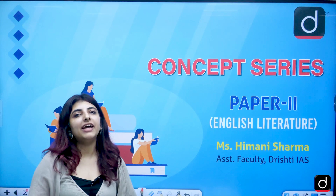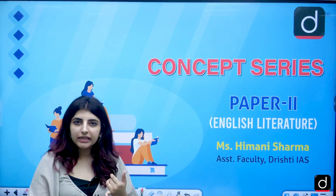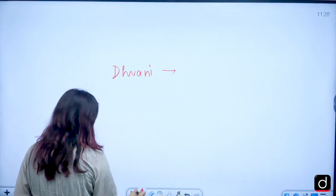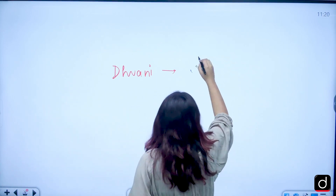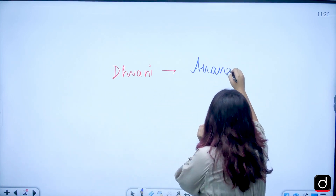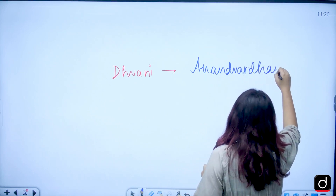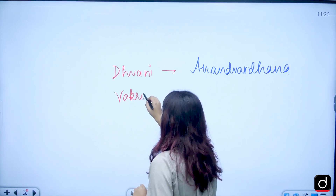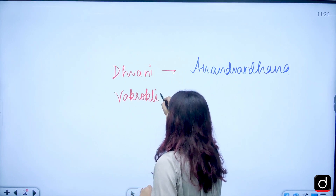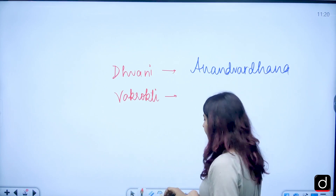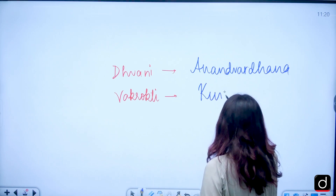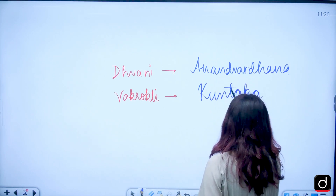We have tried to cover in the previous classes the Dhvani theory of Anandavardhana — Dhvani we have already covered. Then we had the theory of Vakrokti, which has been given by Kuntak.